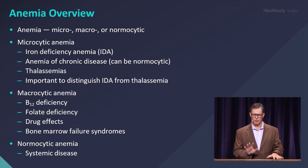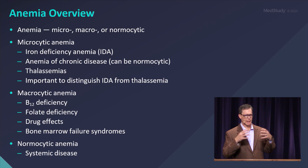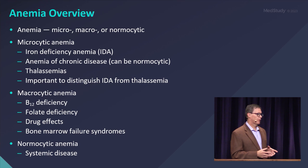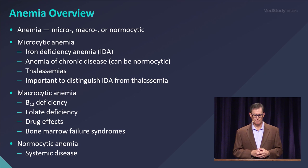If a pathologist reports back a microcytic anemia, we want to develop the context and think about those disease processes that result in microcytic anemia. And then macrocytic anemias — we go immediately to folate or B12 deficiency. Drug effects can do this, and most bone marrow failure syndromes are characterized by a macrocytosis, and we'll come back to that.